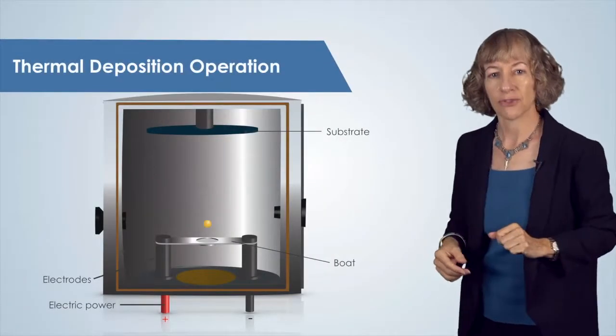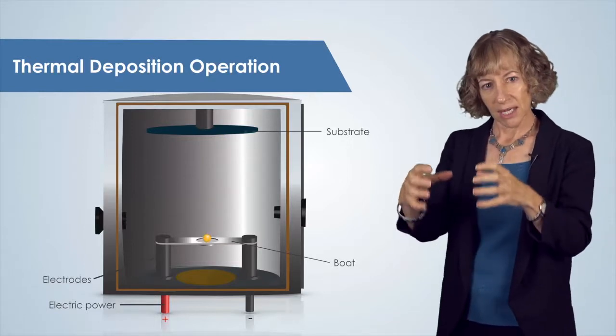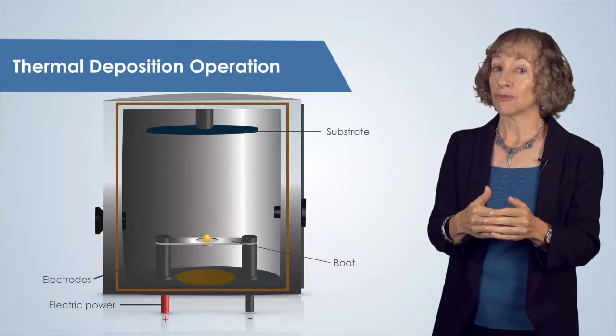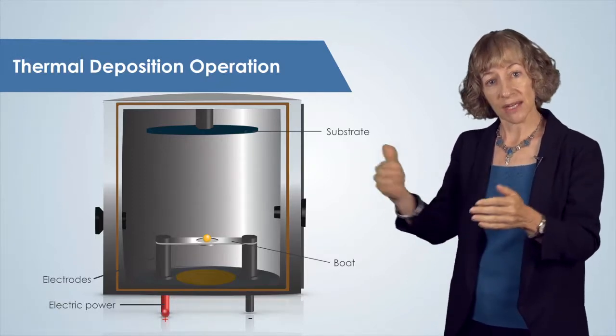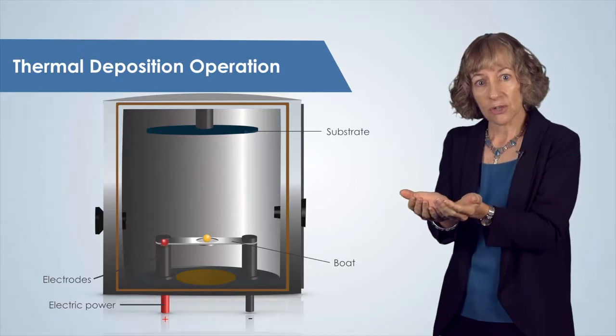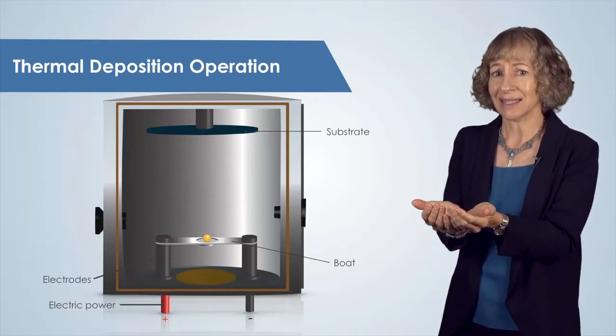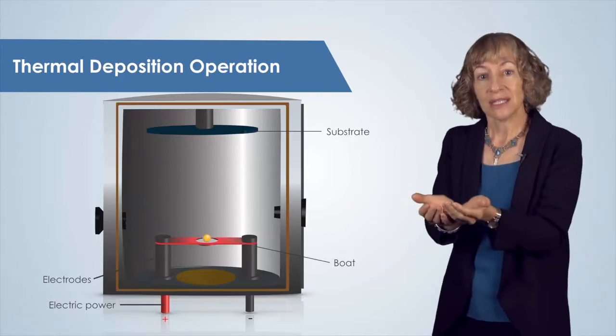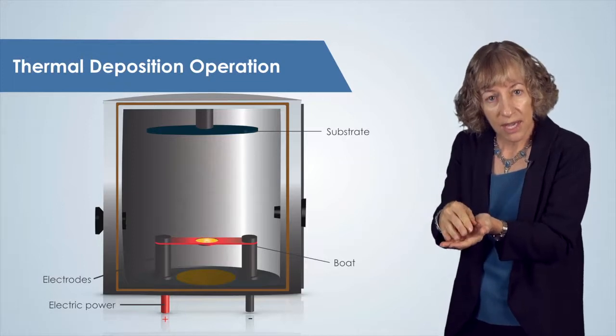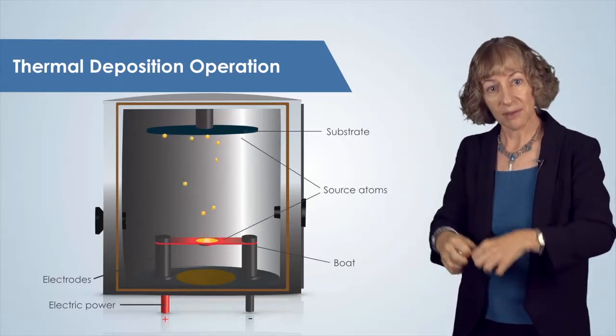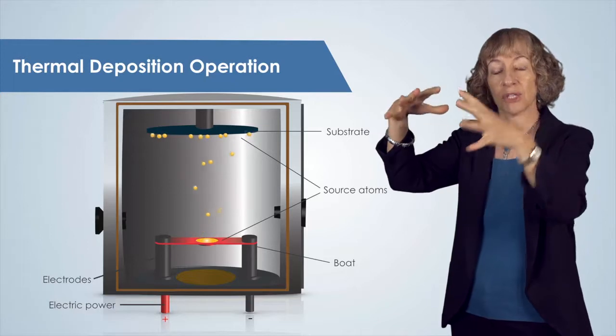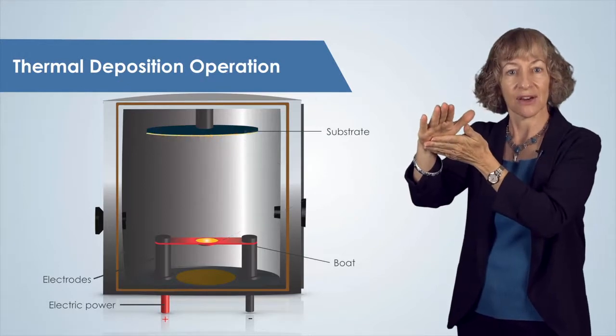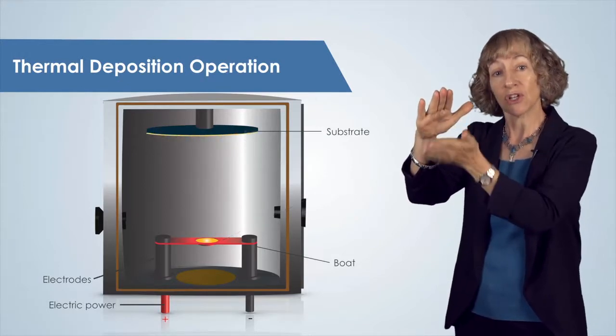Let's look at the mechanics of thermal deposition. The tungsten boat is clamped between two electrodes. An electric current as high as several hundred amps passes through that tungsten boat, which undergoes resistive heating. Just like an incandescent lightbulb filament, it heats up and glows. As the boat heats up, the metal source material in the boat melts and then evaporates. These evaporated metal atoms travel through the vacuum chamber, strike the surface of the substrate, and condense, forming our thin layer of the source material on our substrate.